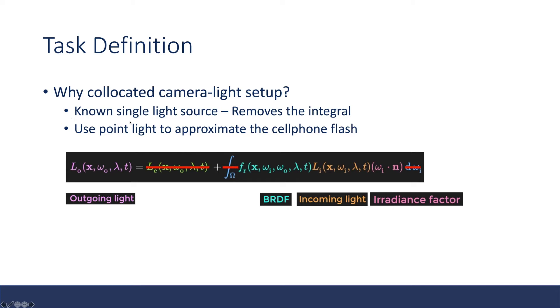Why does a co-located camera light setup help? In this case, it's known that there is only a single light source to light this object up. So we are removing this integral, there is only one light source. We can use a point light to approximate this cell phone flash.